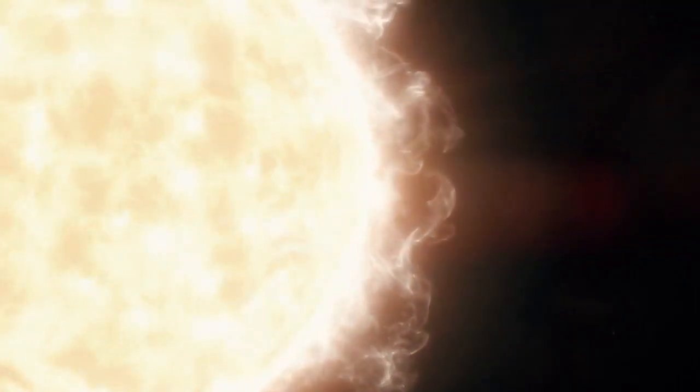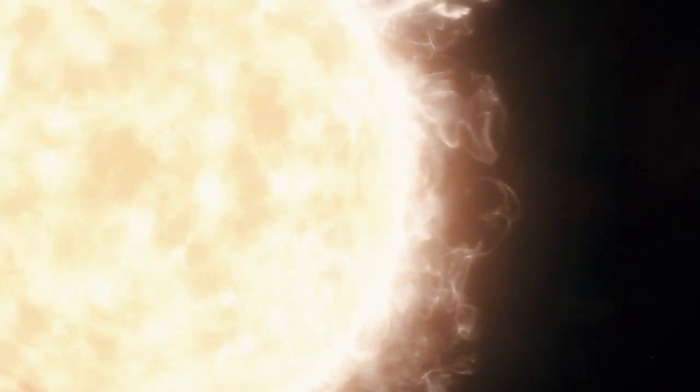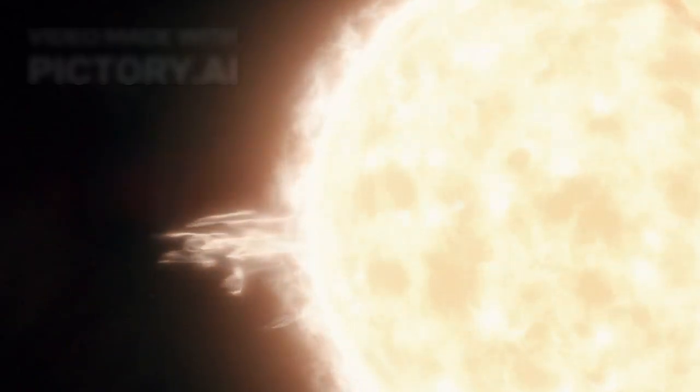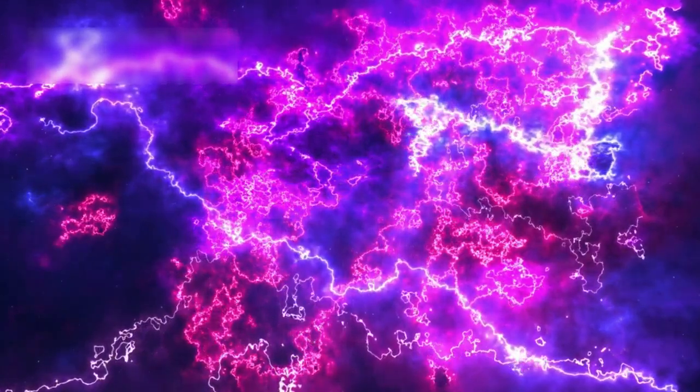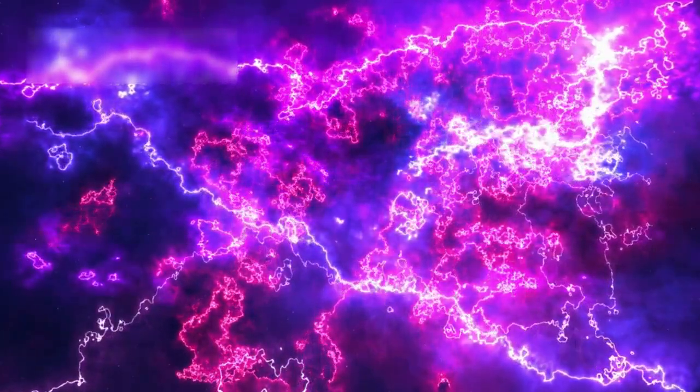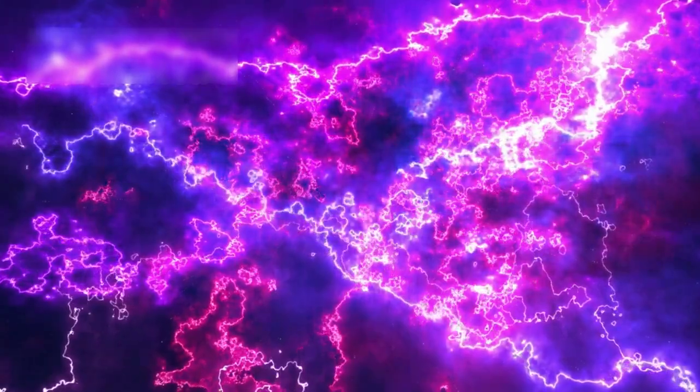Proxima Centauri blasts Proxima b with powerful solar flares, radiating waves that pierce through the cosmic night. These flares release electromagnetic energy that can tear apart an atmosphere. Radiation from these flares flows like stellar lightning, potentially stripping the planet of gases needed for life.